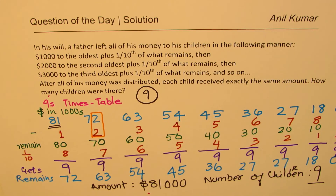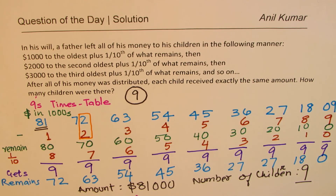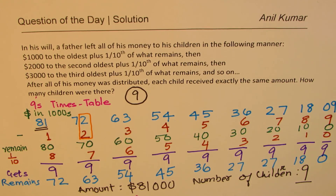There could be more complicated ways of solving this question, but this is the method which I hope everybody can understand and appreciate. I adjusted the screen so the solution is now fully visible. The last column shows the number 9 itself — when you take $9,000, nothing remained, and that is how the whole amount is distributed amongst all the children. Feel free to write your comments, share your views, share my videos with your friends, and post questions for the next question of the day.